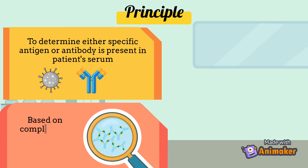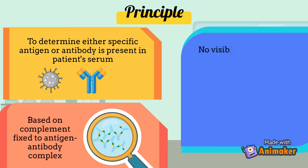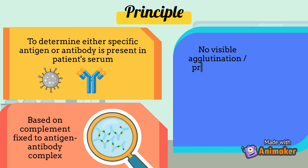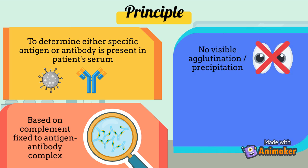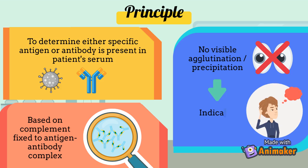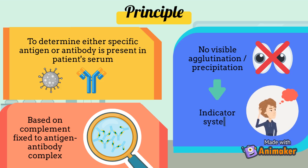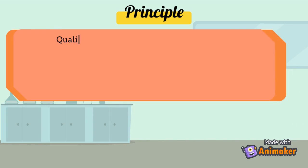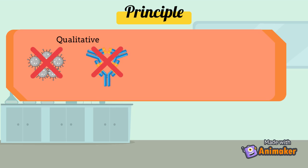Next, this test is based on the principle where the complement fixes to the antigen-antibody complex. Complement fixation does not produce any visible agglutination or precipitation that can be observed with the naked eye. Therefore, an indicator system is needed. Furthermore, CFT is a qualitative test, as a specific amount of antibody or antigen cannot be identified.